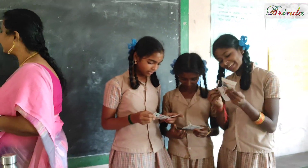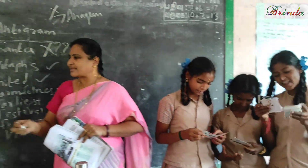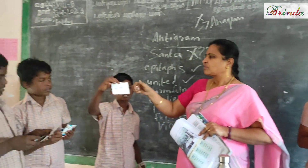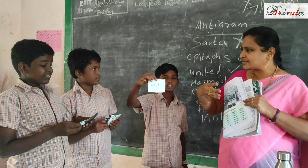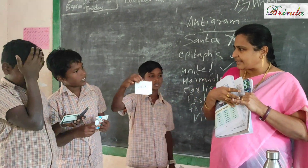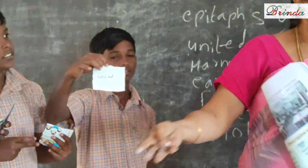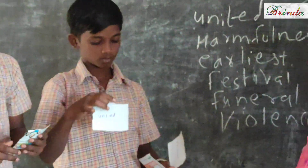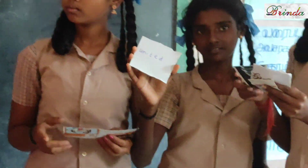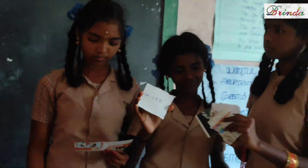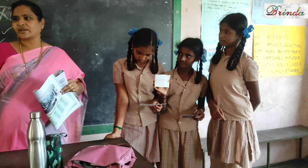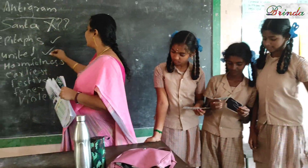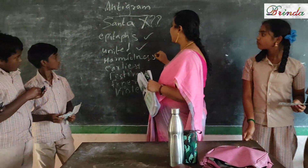Next one: united. Who has united? United means unity, together. What is the opposite word? Untied. So united rearranged gives untied.